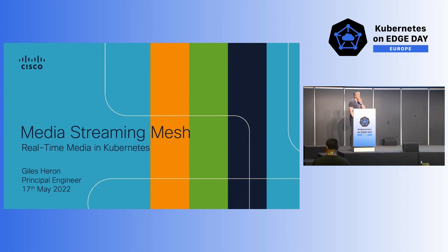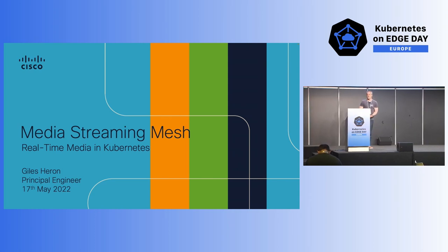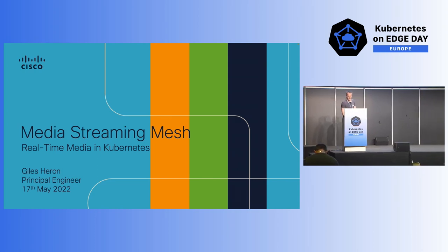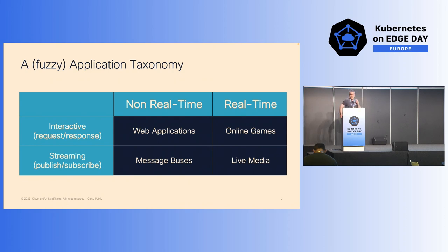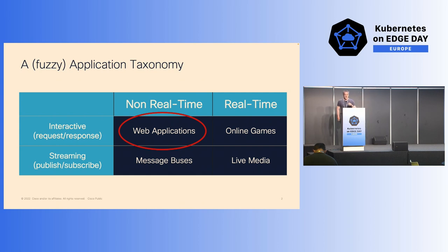The strapline here is real-time media in Kubernetes. This project came from a recognition that Kubernetes seems to be more focused on web applications than on real-time media, and that was what we wanted to address. If you look at applications in the classic two-by-two matrix, you can divide them into non-real-time and real-time, interactive and streaming. My contention is that Kubernetes, particularly if you're using things like Service Mesh, is very much focused on the non-real-time interactive space epitomized by web applications.